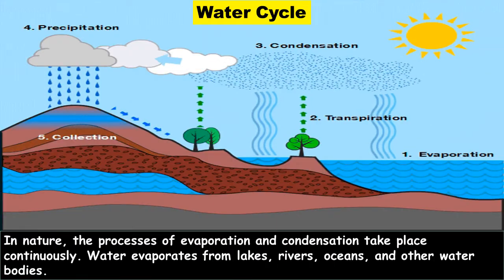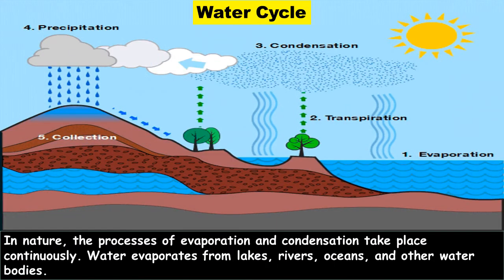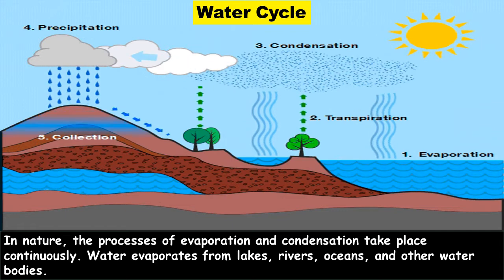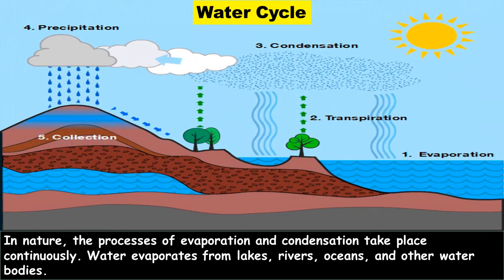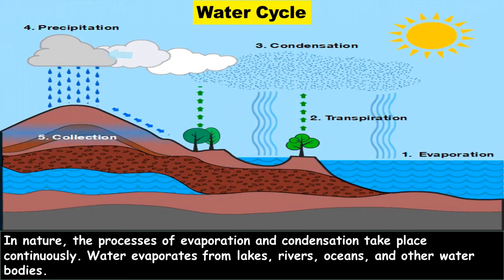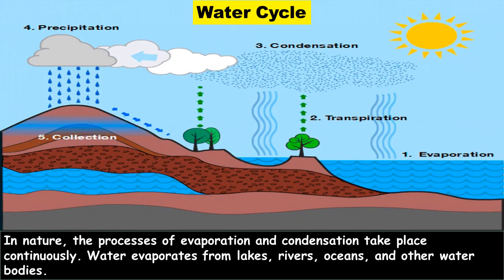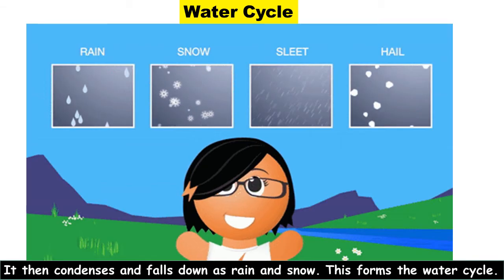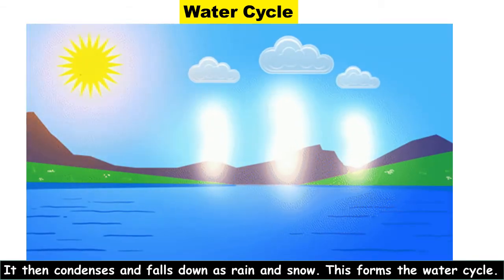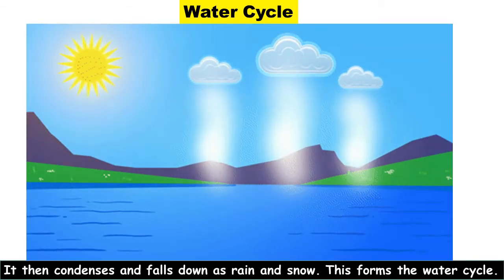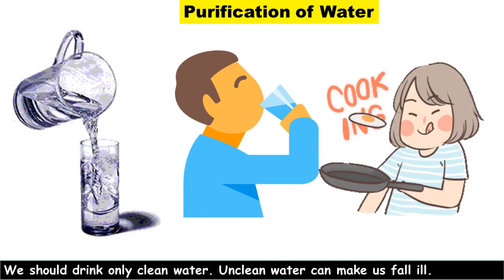Water cycle: In nature, the processes of evaporation and condensation take place continuously. Water evaporates from lakes, rivers, oceans, and other water bodies. It then condenses and falls down as rain and snow. This forms the water cycle.